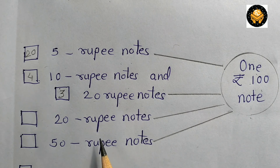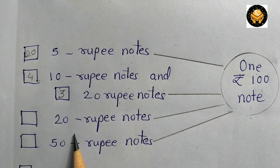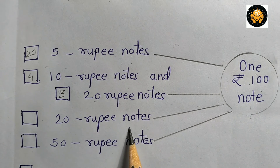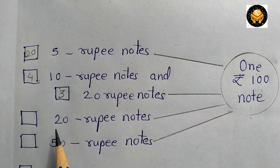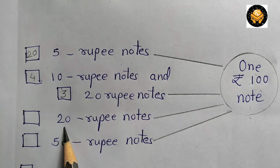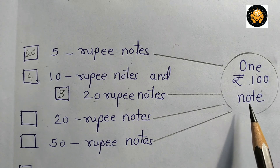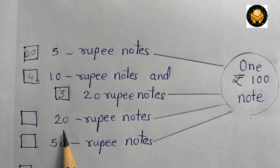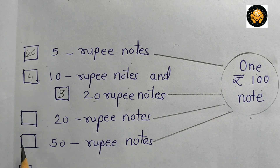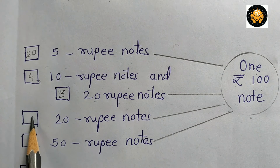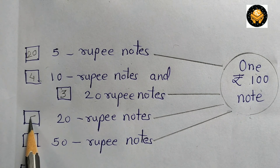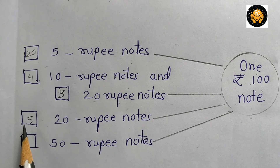Now suppose you want change in the form of 20 rupee notes. Using the table of 20: 20 fives are 100. So 5 twenty-rupee notes are equal to 100 rupees.